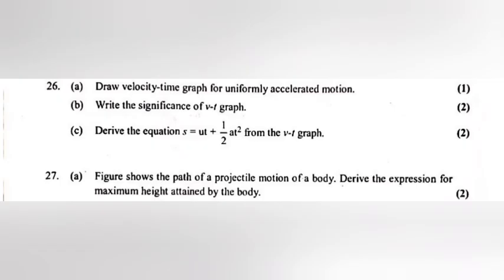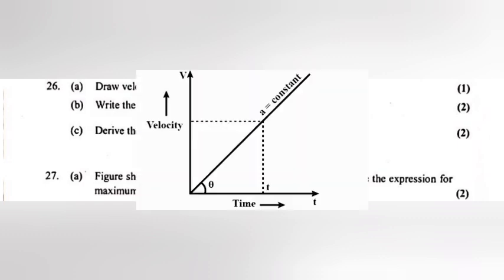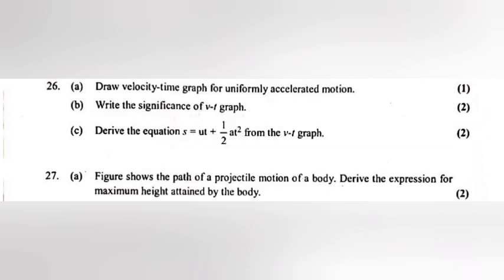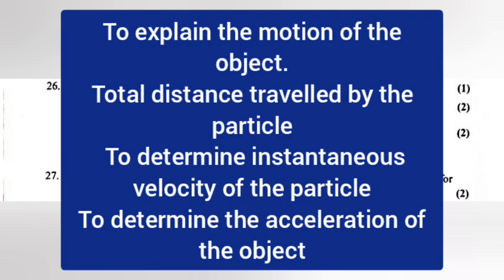Question 26A: Draw velocity time graph for uniformly accelerated motion. 26B: Write the significance of VT graph. Answer: To explain the motion of the object, total distance travelled by the particle, to determine instantaneous velocity of the particle, to determine the acceleration of the object.